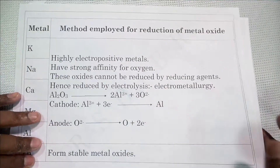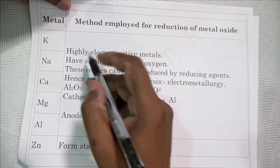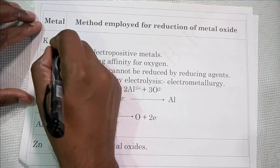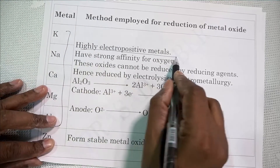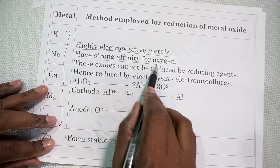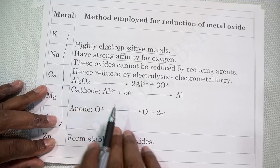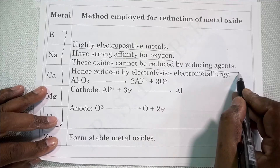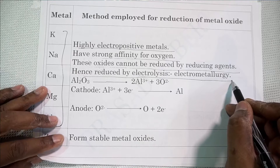Let us understand the various metals and how their oxides are reduced. Looking at the activity series, we have potassium, sodium, calcium, magnesium, and aluminium. These are highly reactive metals from potassium to aluminium. They are highly electropositive and have very strong affinity for oxygen, so they do not lose oxygen easily. To remove oxygen from these metals is a very difficult task. These oxides cannot be reduced by reducing agents; hence they are reduced by electrolysis, otherwise known as electrometallurgy.